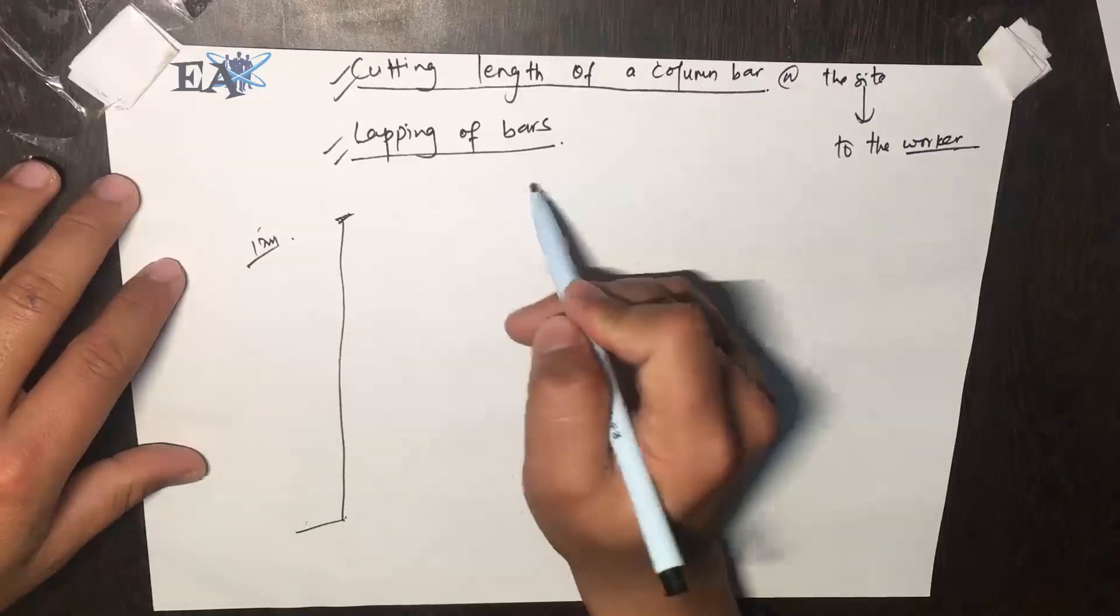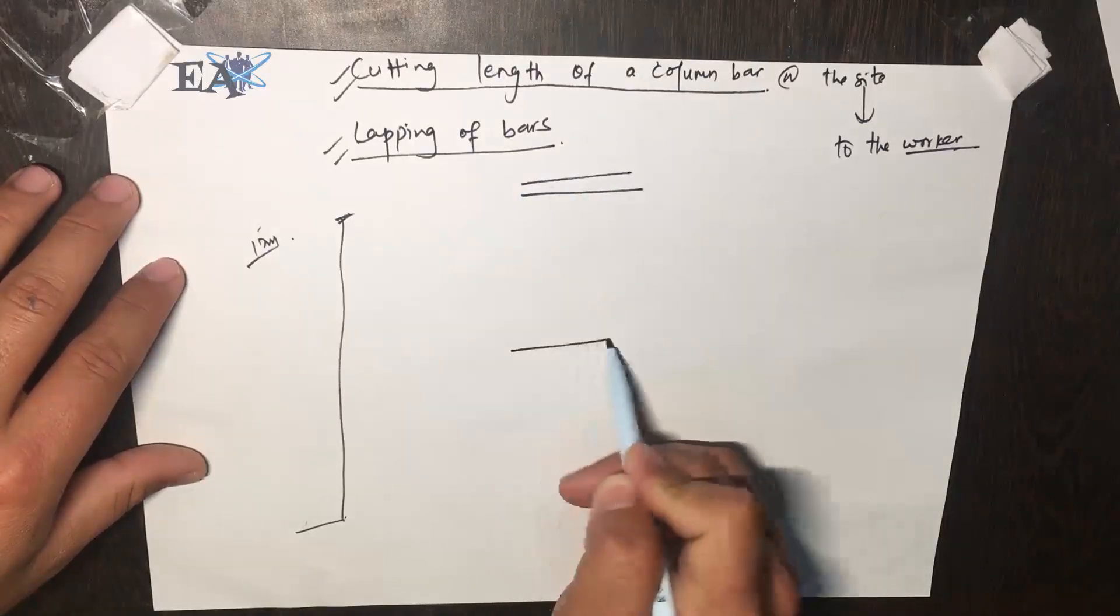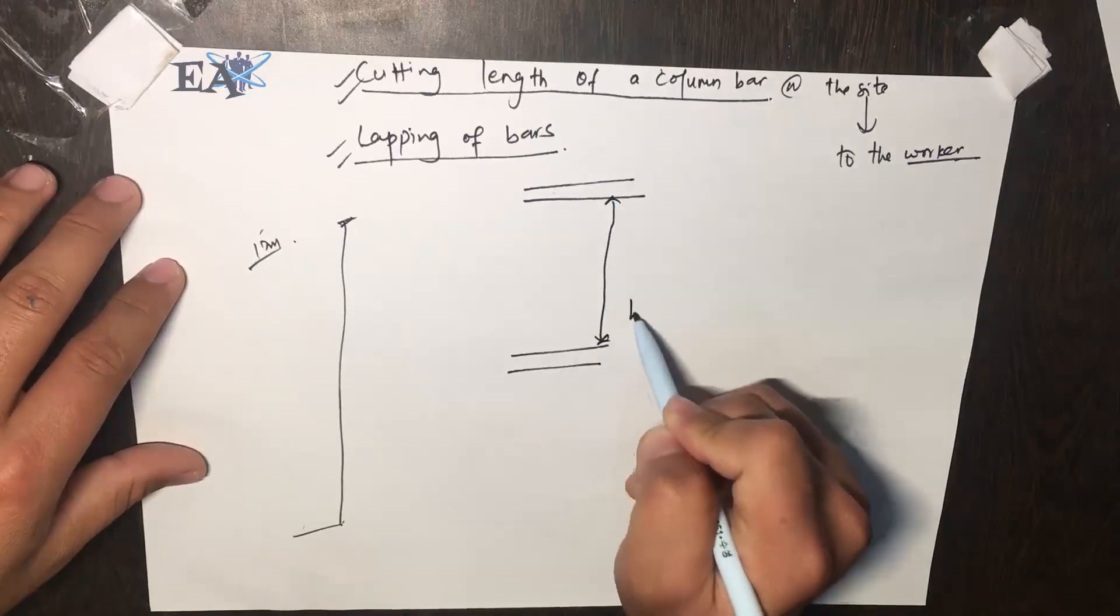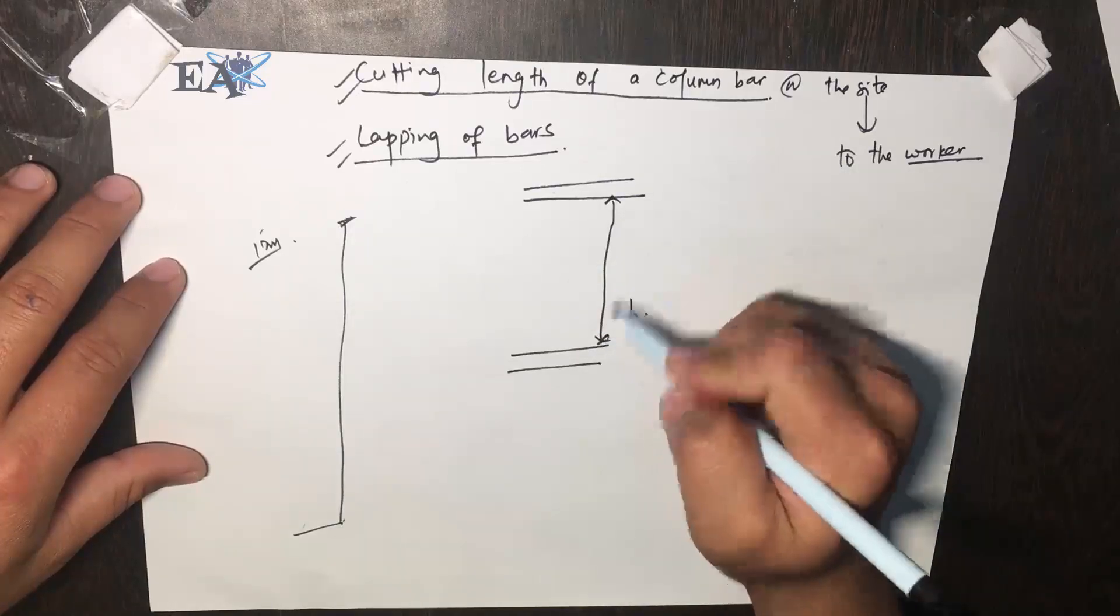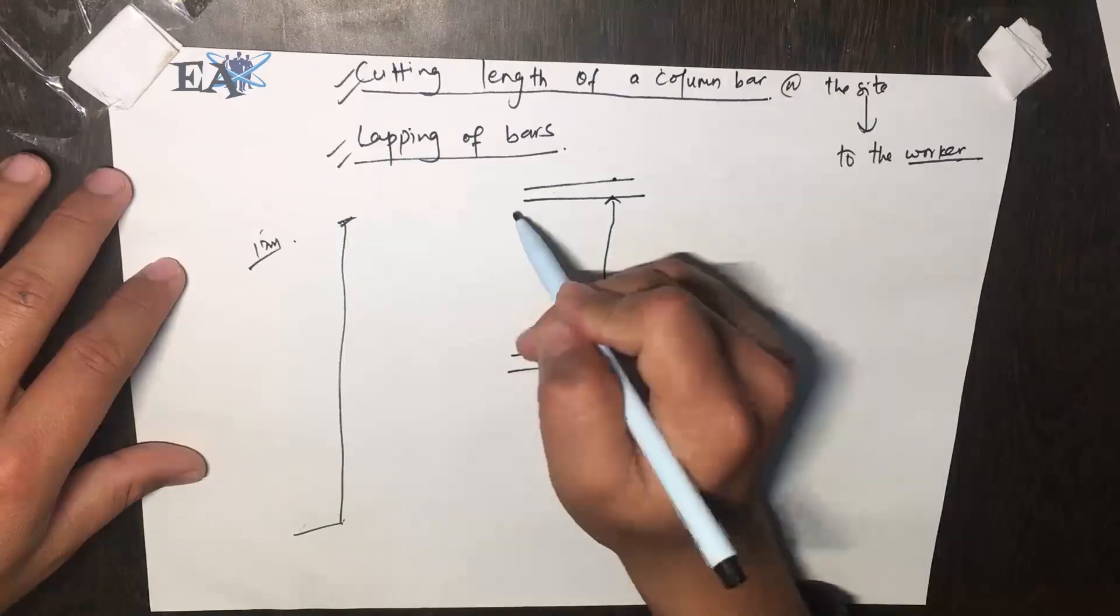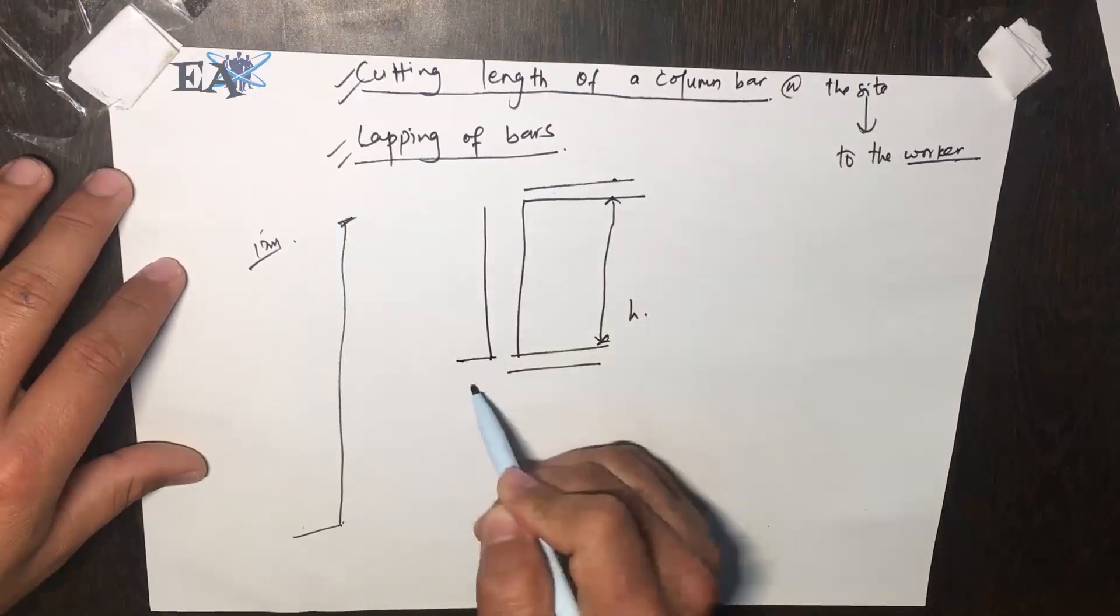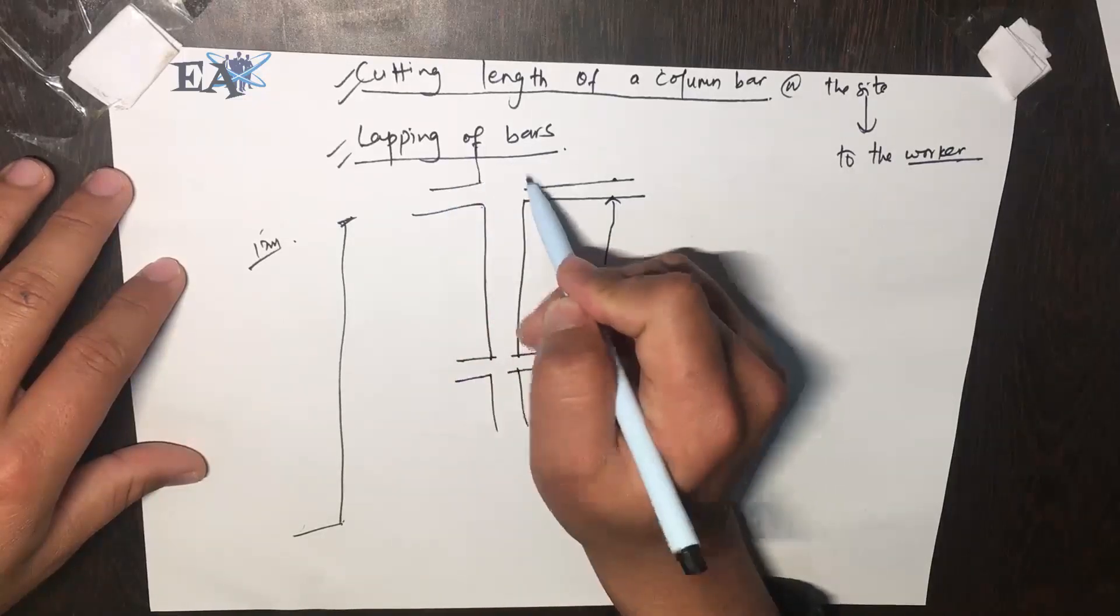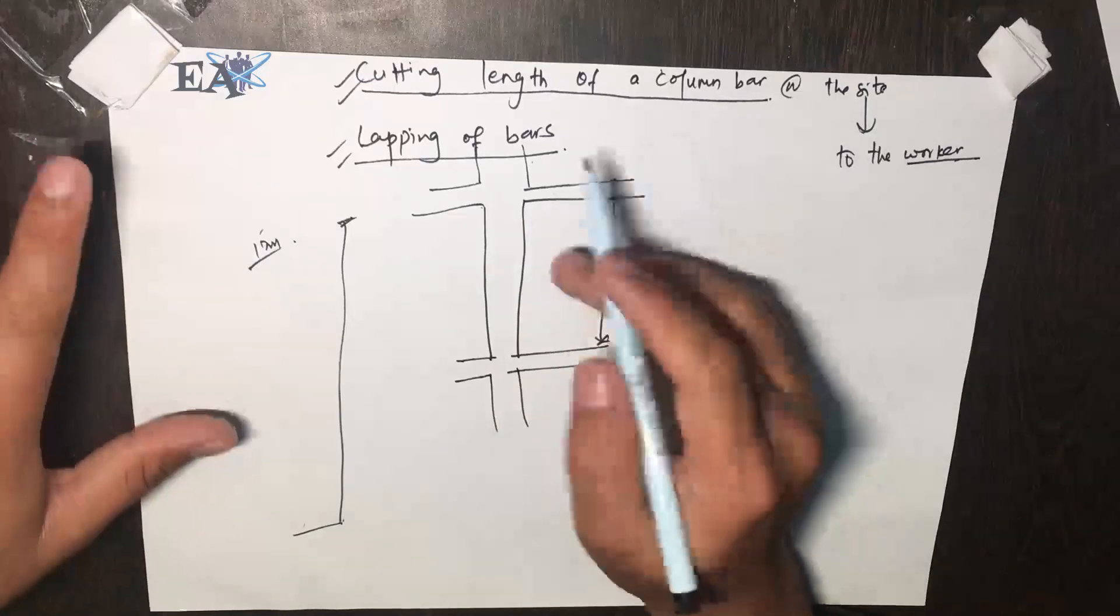Let's make a slab. This is a slab. From one slab to another slab we have the height of this floor. The height of the floor is considered up to this point, but we'll take only this portion of the height. Here is our column. You also have a beam at this position, but for now let us just take this slab.